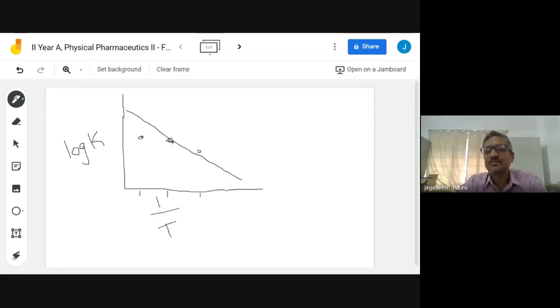You know the 25 means 273 plus 25 is 298. 1 by 298 you calculate it, you have got something 3.33. So you put that, that is corresponding to RT, that is 25.